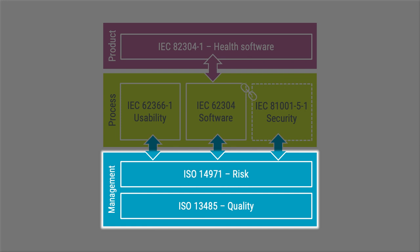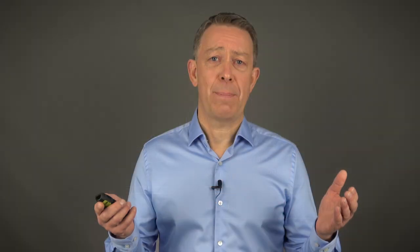ISO 14971 contains requirements on your risk management process — that is, how you should be performing risk management. The risk management process provides one of the most important inputs to a software development process: hazardous situations. A good understanding of a hazardous situation is key to performing meaningful software risk management and getting it right. You can find courses on both ISO 13485 and ISO 14971 on Medical Device HQ.